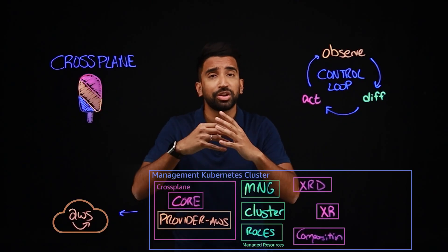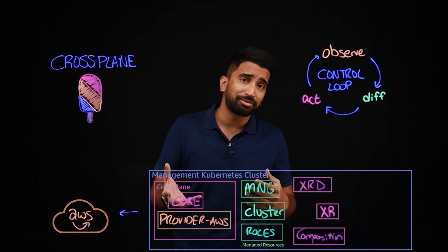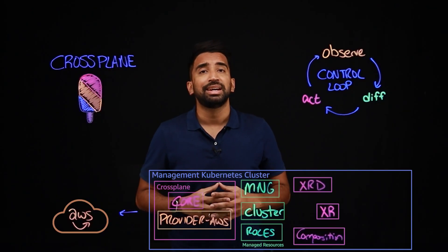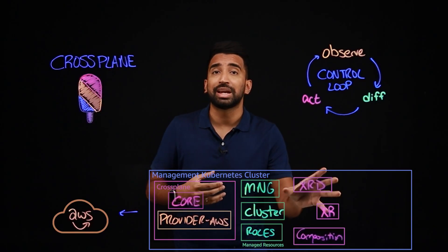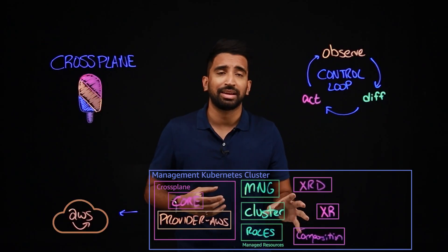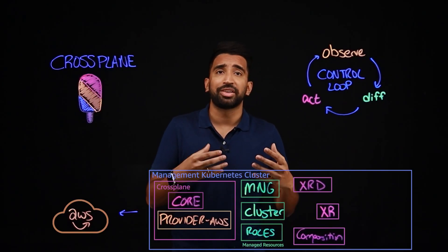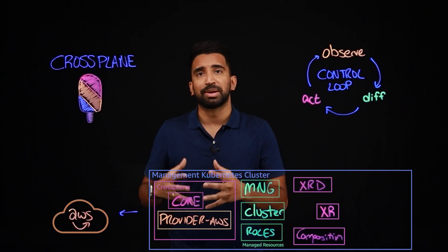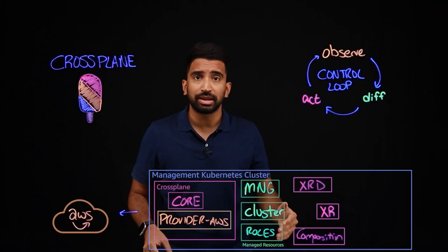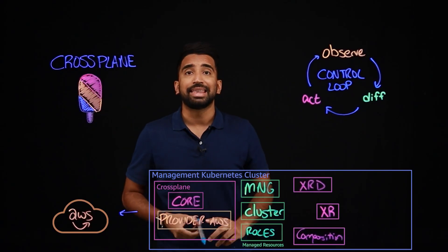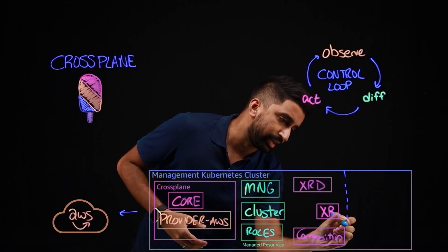All the components we've talked about so far are the responsibility of the platform or operations teams. Generally, your app developers will never create composite resources directly. For one, composite resources are scoped globally rather than to a namespace. So we want a clear separation of responsibility between the platform team and the application team. We'll draw a dotted line here.